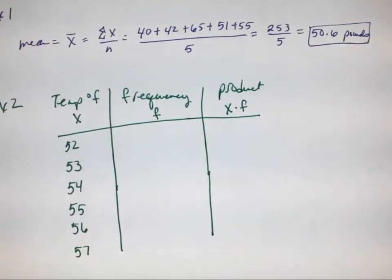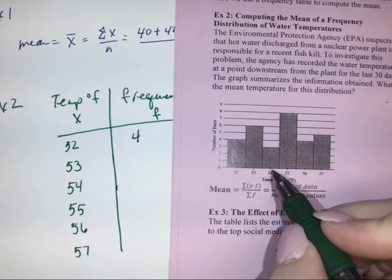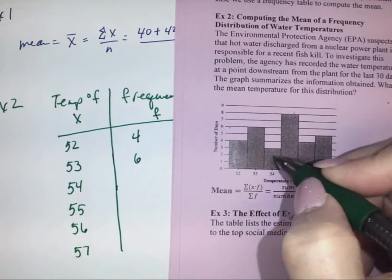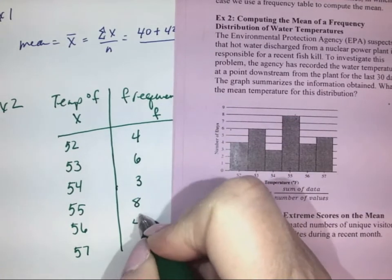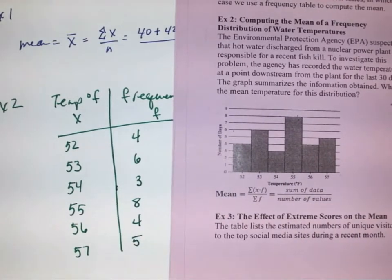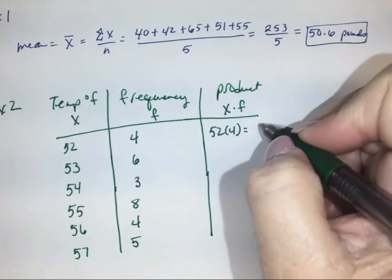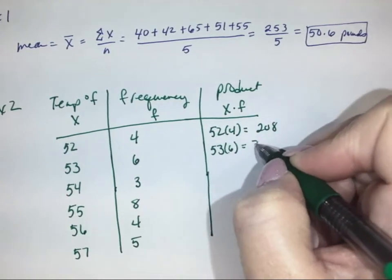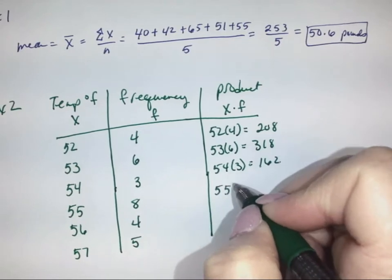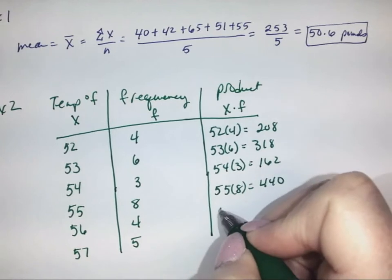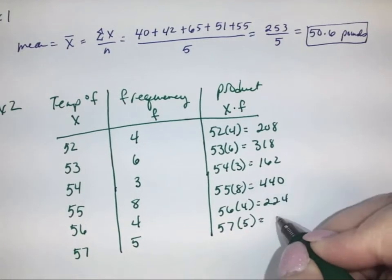We're going to look at how many times they occur. 52 occurred 4 times, 53 occurred 6 times, 54 occurred 3 times, 55 occurred 8 times, 56 occurred 4 times, and 57 occurred 5 times. Now we're going to multiply 52 times 4, which gets us 208. 53 times 6 equals 318, 54 times 3 equals 162, 55 times 8 equals 440, 56 times 4 equals 224, and 57 times 5 equals 285.